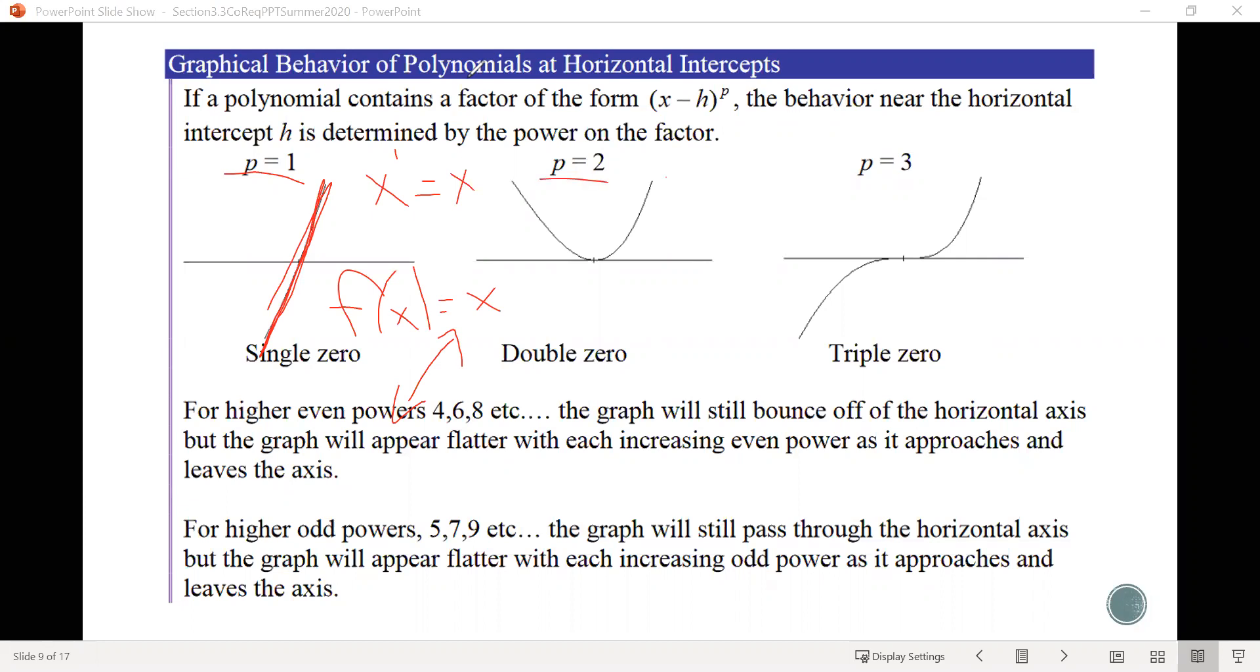For p equals 2, we'll notice that's kind of like saying x squared, which if we think about our graph of f of x equals x squared, what does that look like? Oh, yeah, it's kind of this parabola shape, which looks oddly similar to what we have here, right?